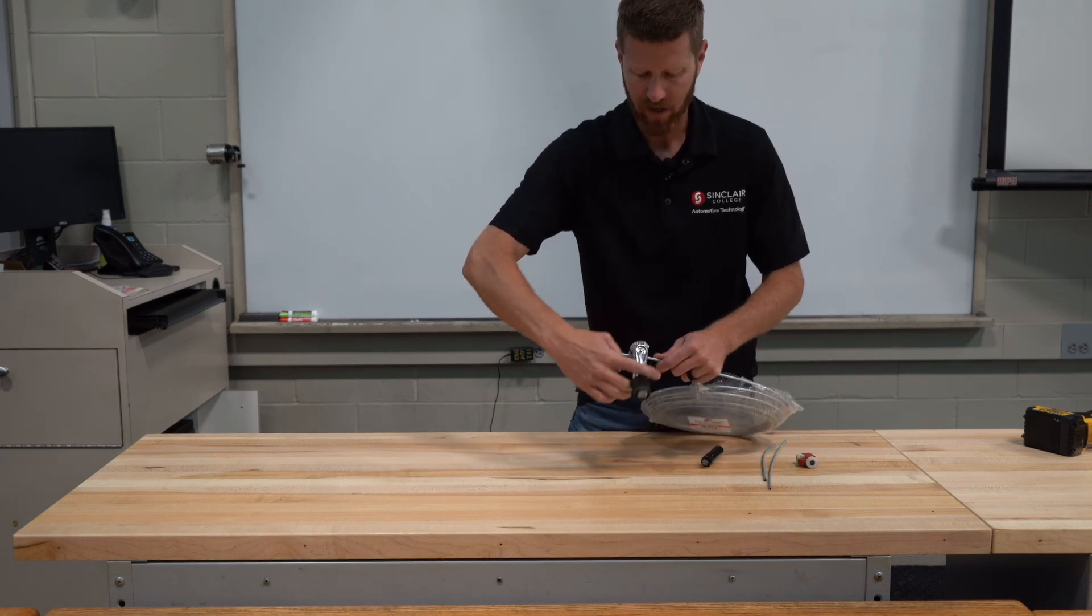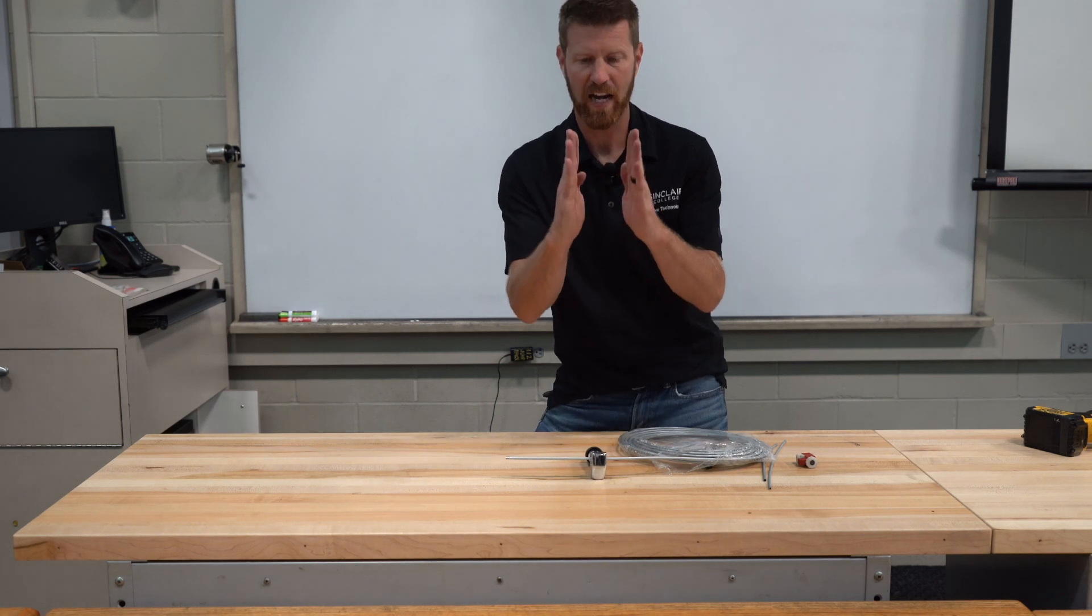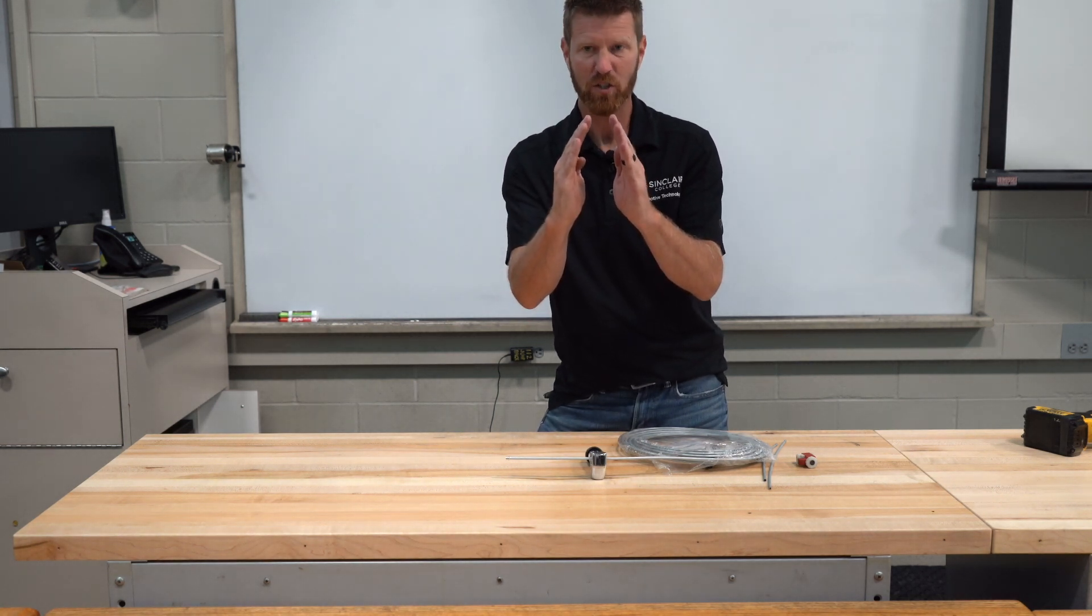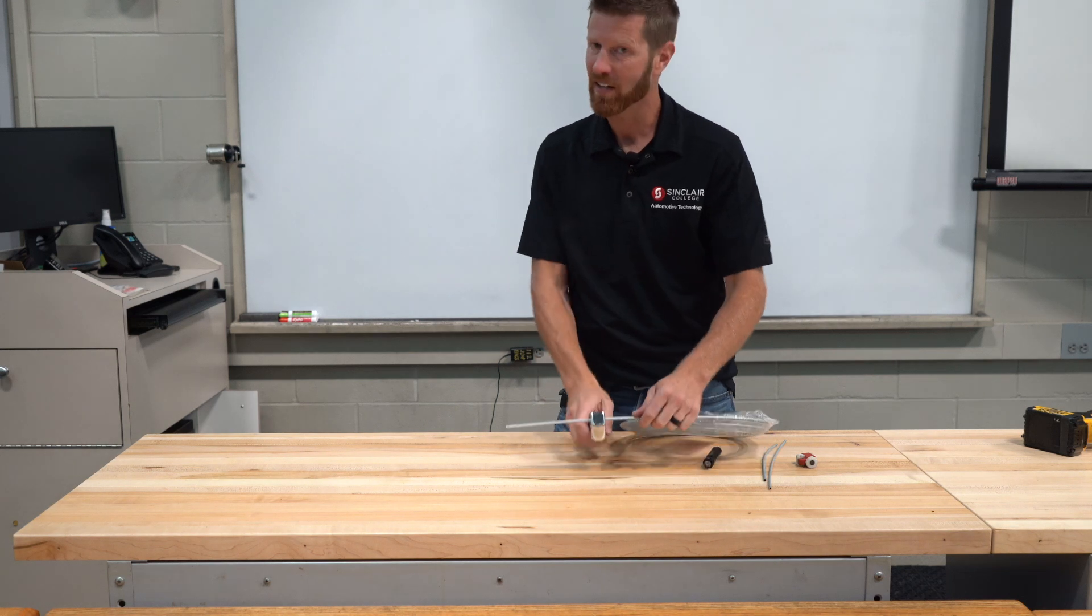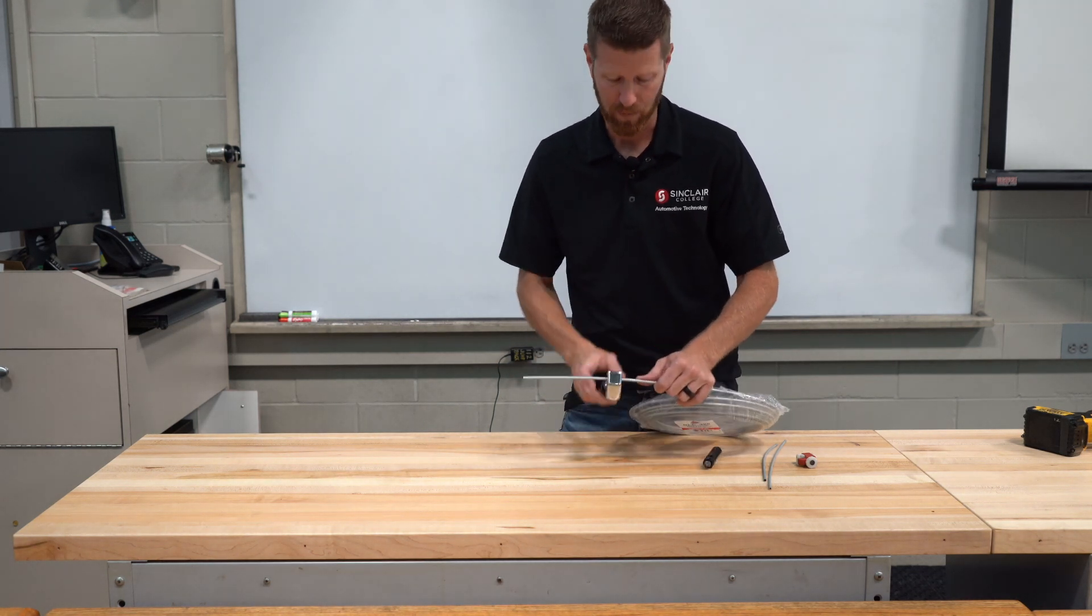Otherwise if you get kind of ahead of yourself or get too aggressive with this, what you're actually going to do is you're going to take the end of the line that should look like this and you're going to kind of tweak the outside and then it doesn't want to fit into the flaring tools like it's supposed to.